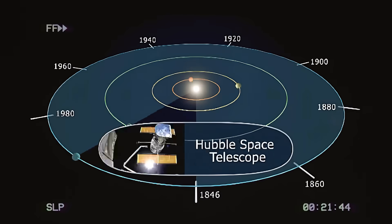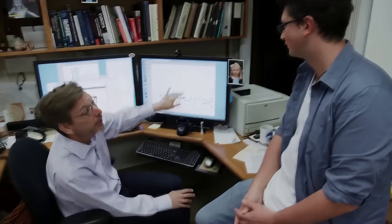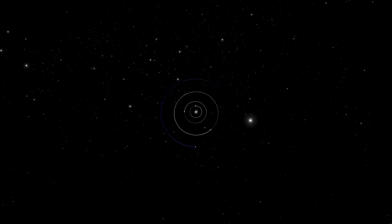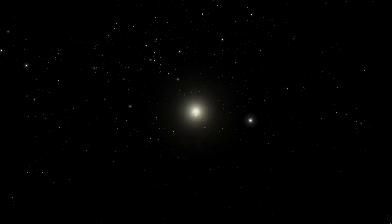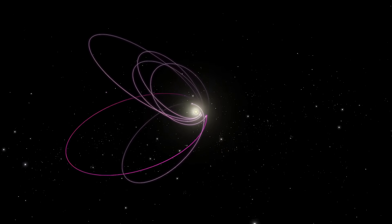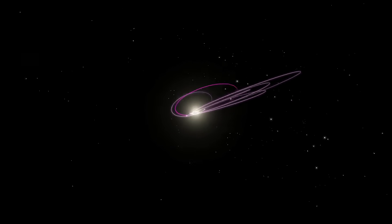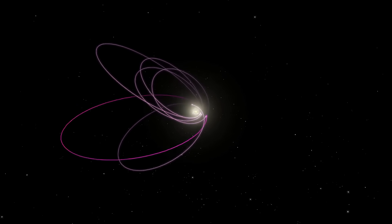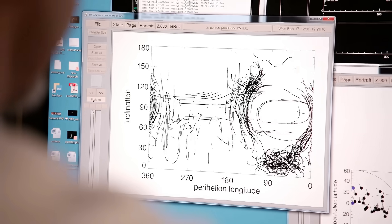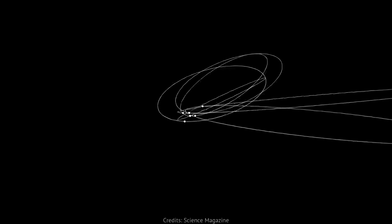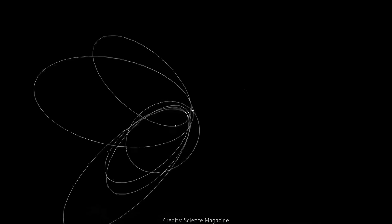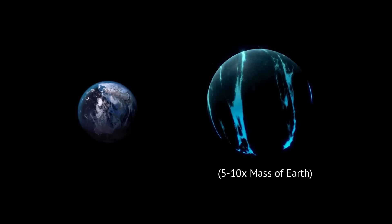Now, let's fast forward to 2016. Two scientists, Mike Brown and Konstantin Badigin from Caltech, noticed something strange. They were looking at the orbits of a few distant objects in the Kuiper Belt when they noticed a pattern. These orbits weren't random. They were clustered, tilted in the same direction, as if something massive was tugging on them. When Mike and Konstantin followed the data, it led them to a wild possibility. The only thing that could explain the strange orbits of these Kuiper Belt objects was a hidden planet, something five to ten times the mass of Earth, far beyond Pluto.